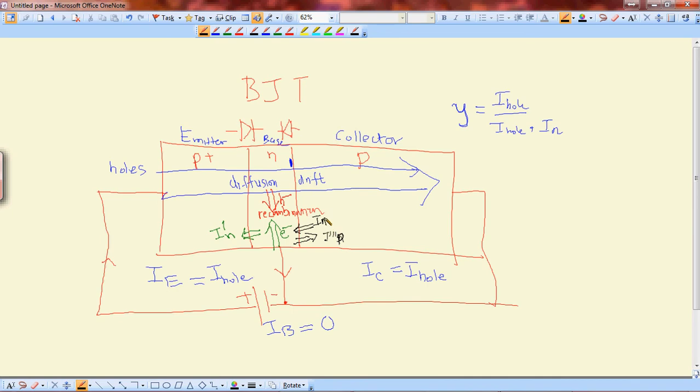And this is very small. Here, some current will go back from a collector to the base. Normally, we ignore these two because the drift here is very high. And that it will supersede all this current. And these become very small and can be ignored.